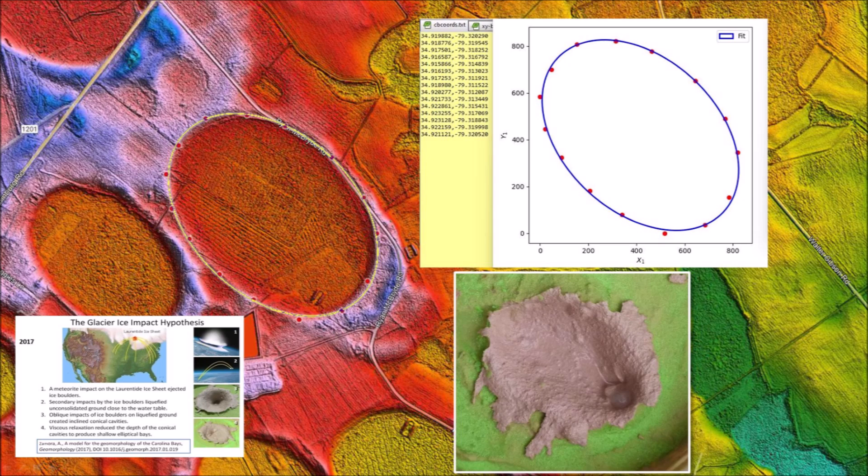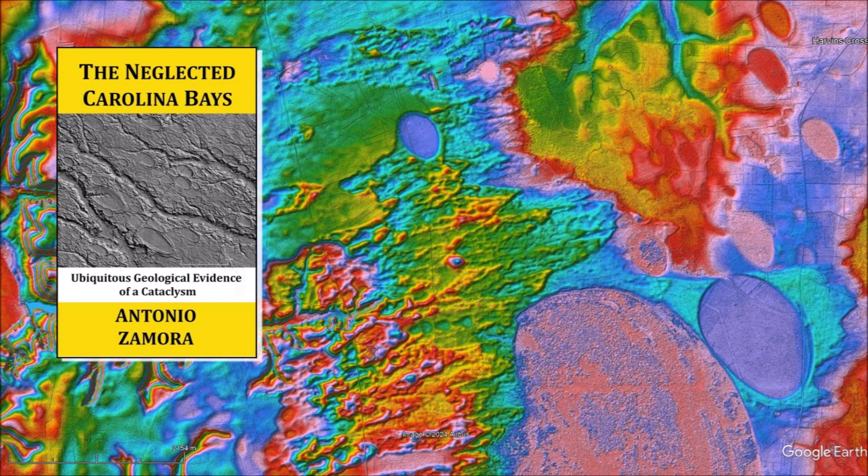The wind-blown sand sheets that formed contemporaneously with the Carolina Bays add a great degree of complexity to a very enigmatic geological puzzle. Thank you for joining me in the investigation of the Carolina Bays and the Younger Dryas Cataclysm. The Carolina Bays should not be neglected — ask your geology professors to discuss the Carolina Bays, because they are the most prevalent geological structures in the Atlantic coastal plain. There is a link to the LiDAR visualization tool in the description of the video. My book about the Carolina Bays is available at Amazon. Subscribe to my YouTube channel to be notified of future videos about the Carolina Bays and other scientific topics.